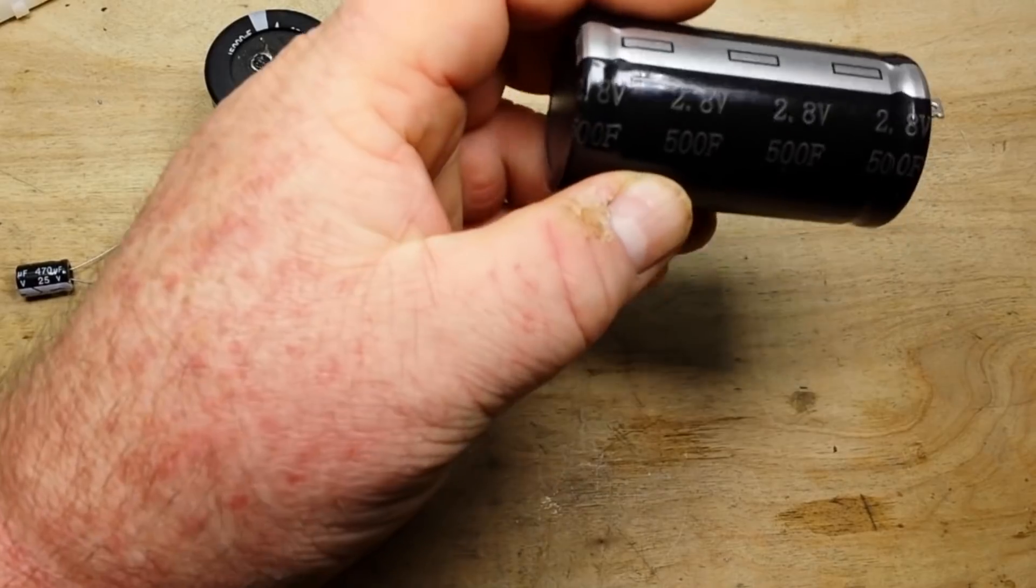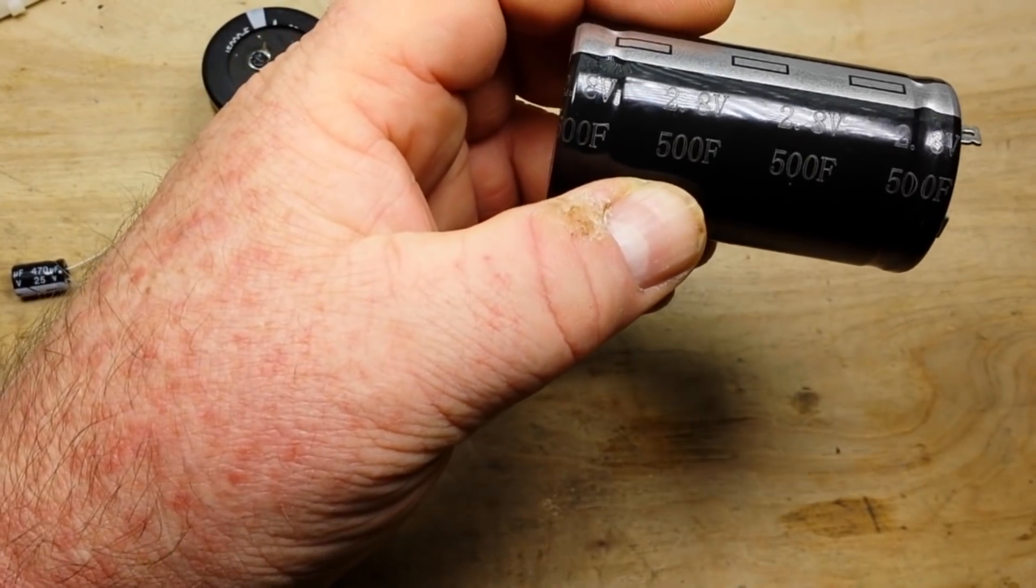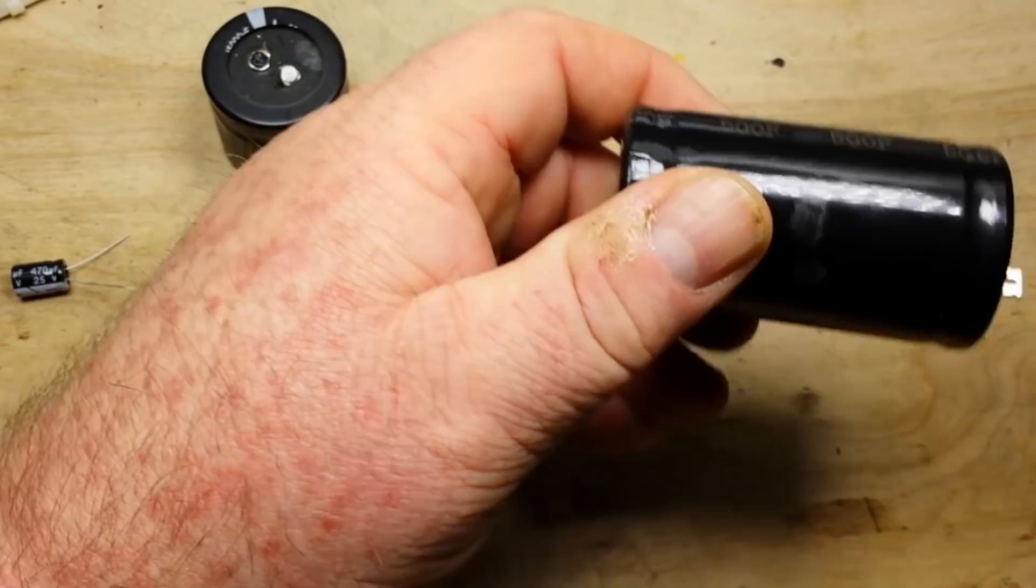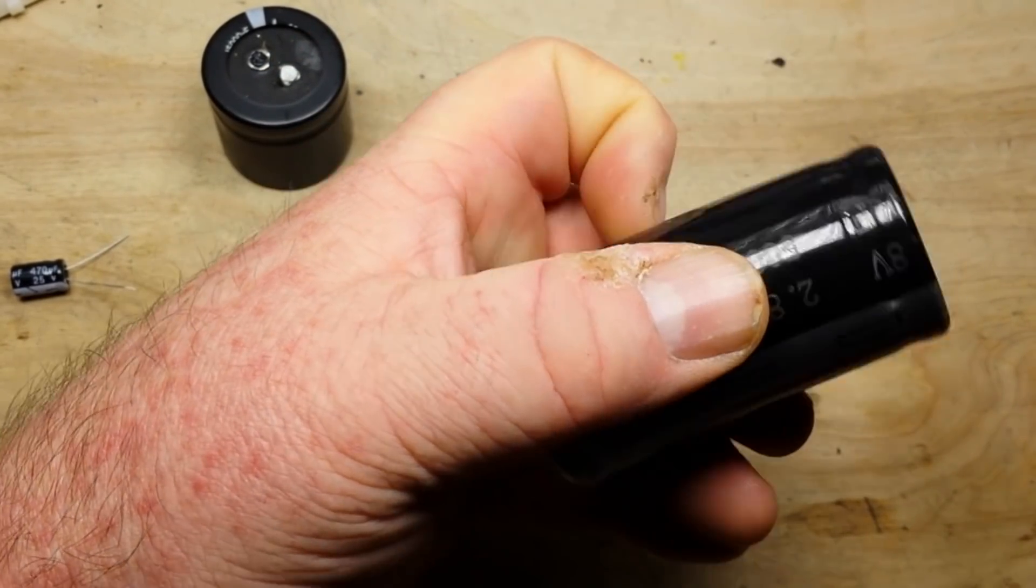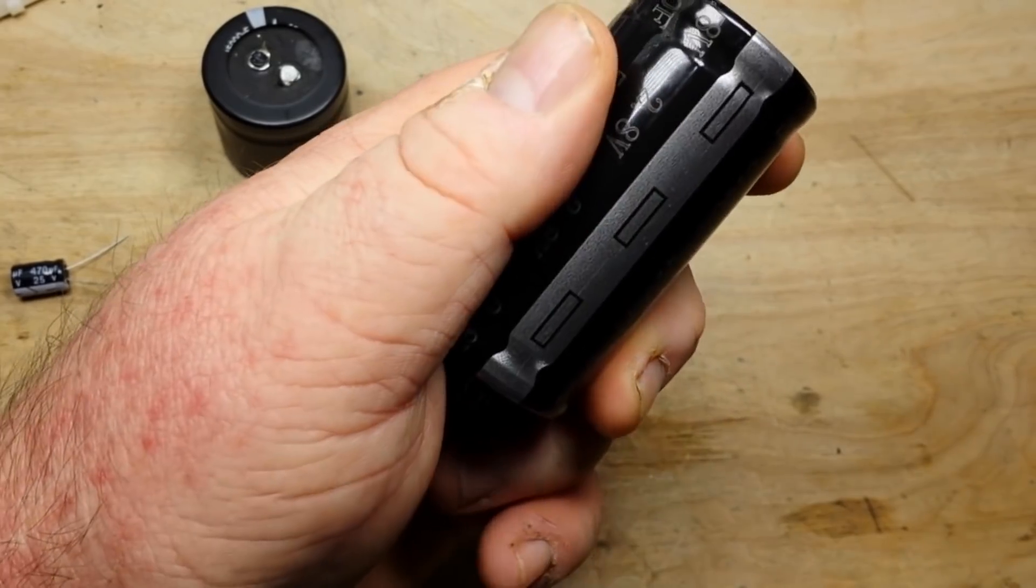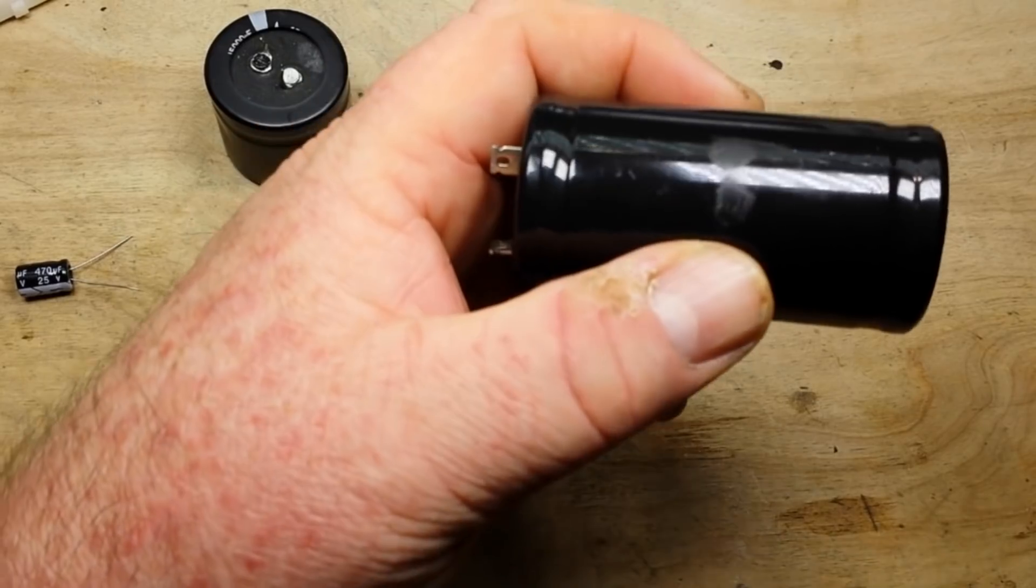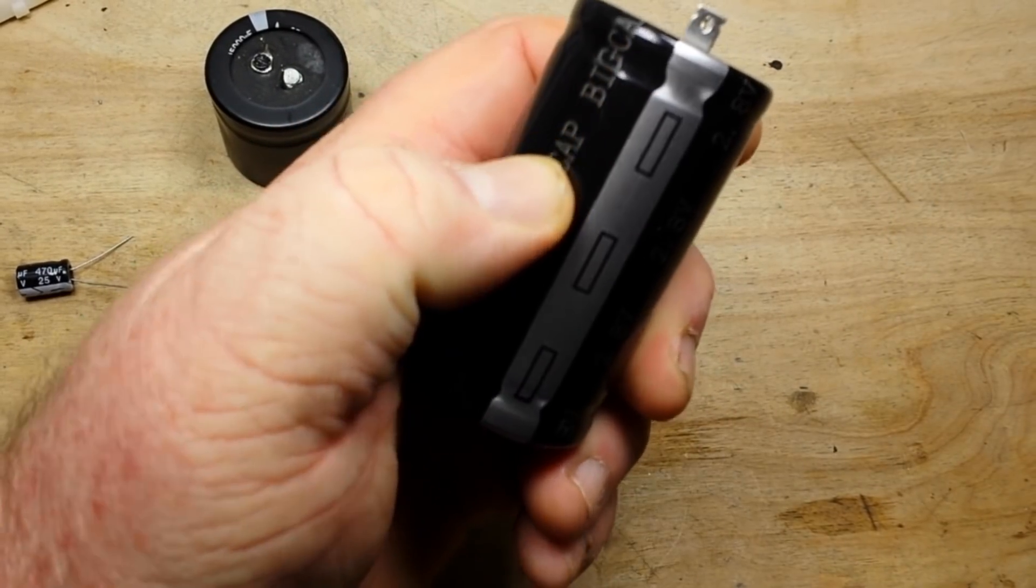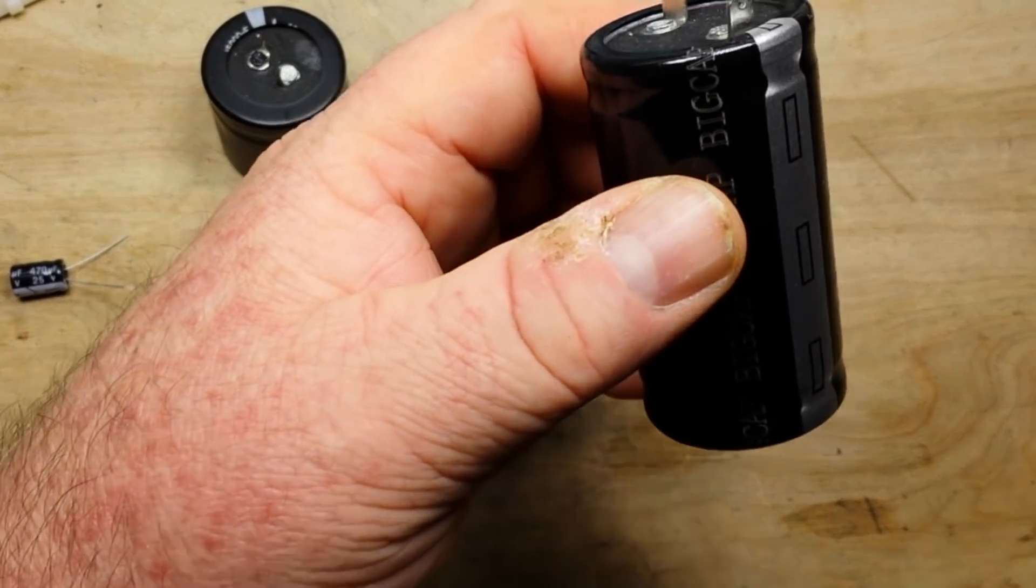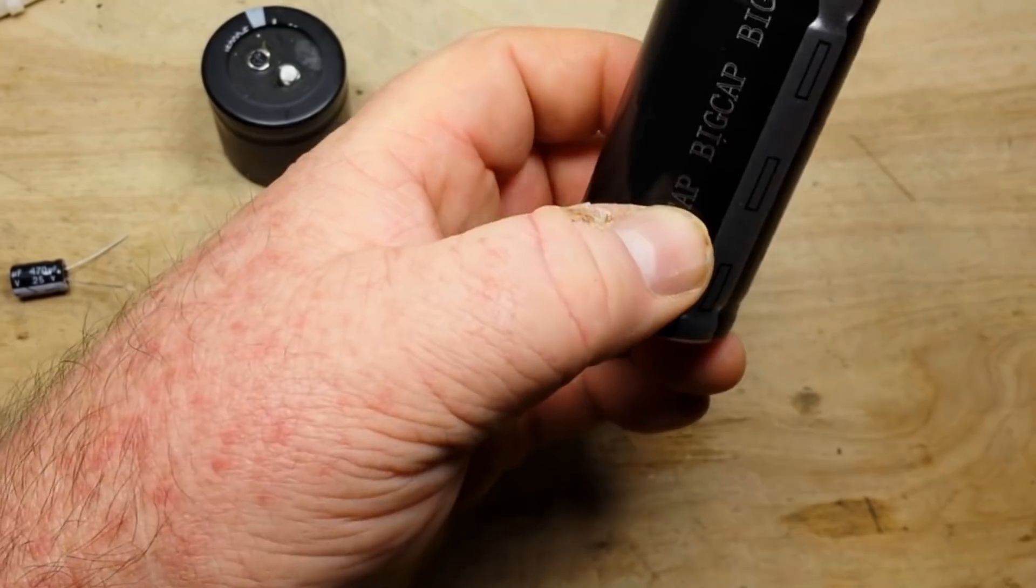There are different types of supercapacitors and I'm not exactly sure what type this one is, but there are electrostatic double layer capacitors also known as EDLCs, and they use carbon electrodes and have a much higher double layer capacitance than electrochemical pseudocapacitors that you find in regular electrolytic capacitors.